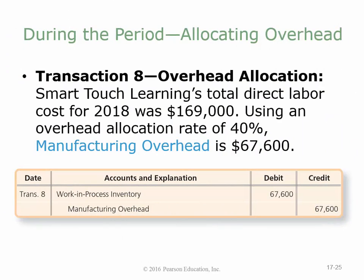Smart Touch Learning's total direct labor cost for 2018 was $169,000. Using an overhead allocation rate of 40%, manufacturing overhead allocated is $67,600. They took the $169,000 and multiplied by 40% to get the amount of manufacturing overhead applied to their jobs. The journal entry debits work in process inventory $67,600.